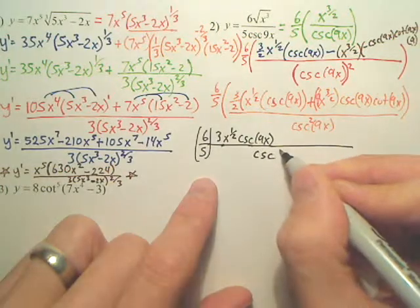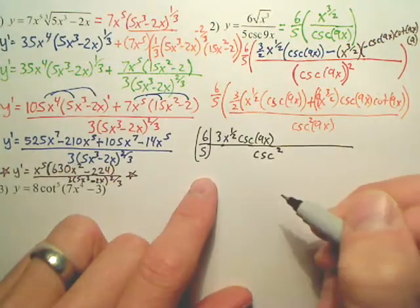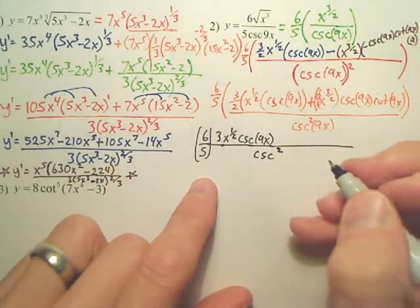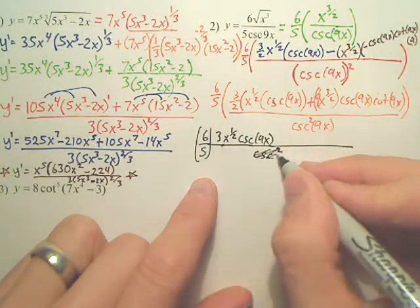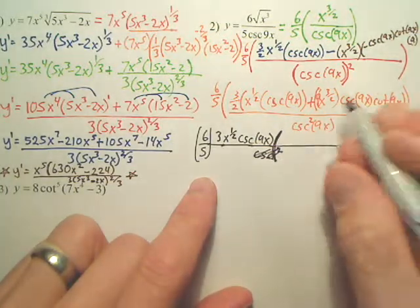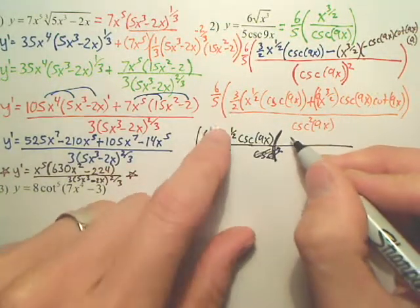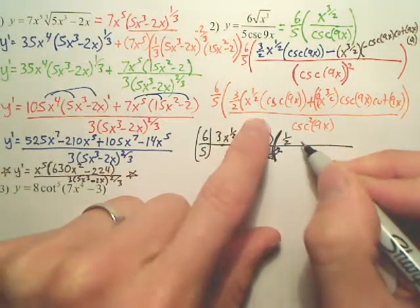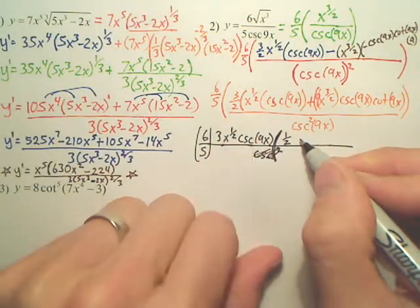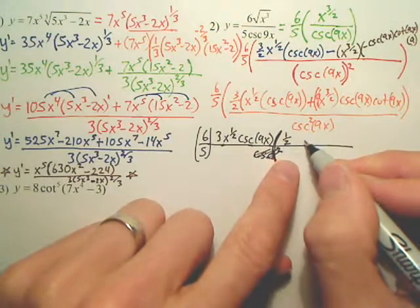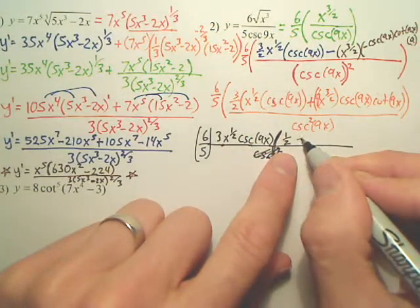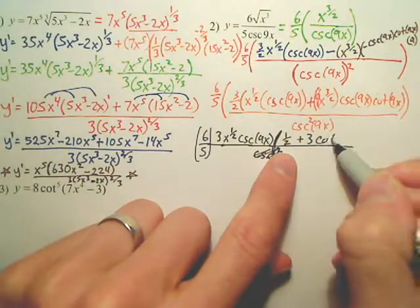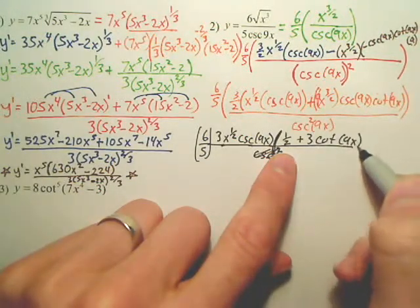Now, I have this on the bottom. Actually, let's put this right here. Put that. On top, I have a 3 still. No, the 3 is out, but I have a 1 half. That's all I have. That's only a 1 half. And then right here you have a 3 left. And you have a cotangent 9x.